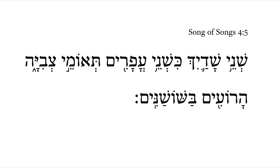Song of Songs 4-5. We get here two of — notice the plural construct — so we have two of your breasts. We have the word 'shad' here with the feminine singular pronominal suffix 'your,' so your two breasts, or the two of your breasts.